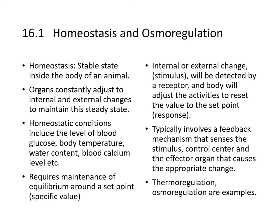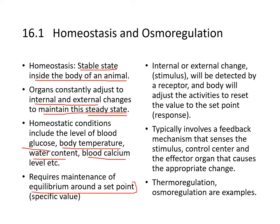Let's talk about homeostasis. Homeostasis refers to the stable state inside the body of an animal, and organs constantly adjust to internal and external changes to maintain the steady state. Homeostatic conditions include levels of blood glucose, body temperature, water content, blood calcium levels, etc. This requires maintenance of equilibrium around a set point. Internal and external changes, or stimulus, will be detected by a receptor, and the body will adjust activities to reset the value to the set point. This involves a feedback mechanism with a control center and effector organ that causes the appropriate response.